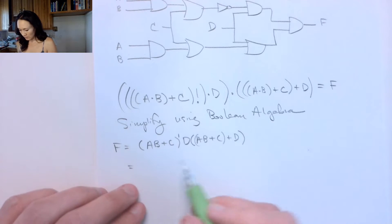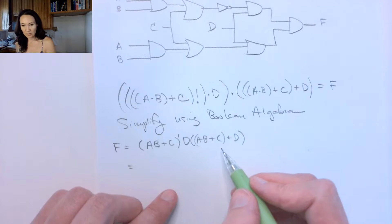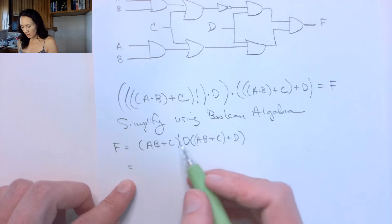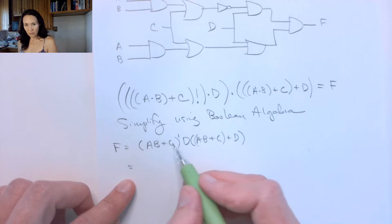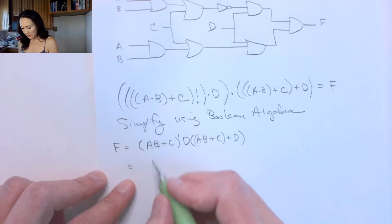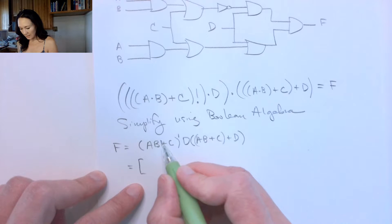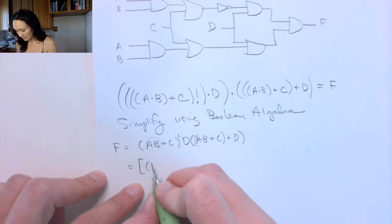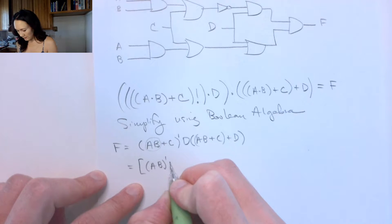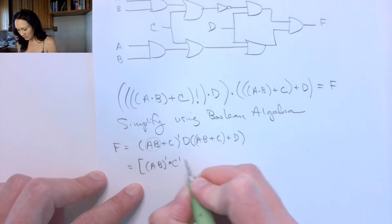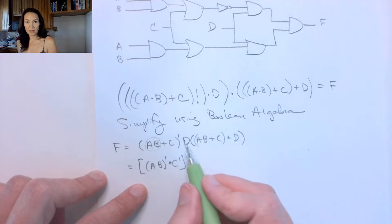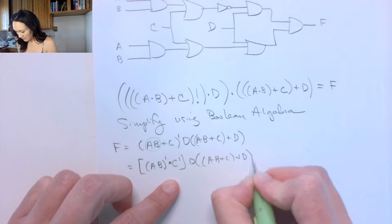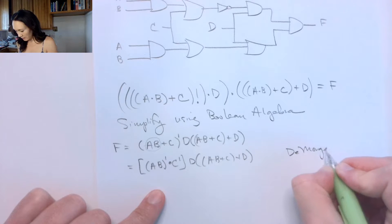What I'm going to do is apply DeMorgan's to this term right here. Everything inside, I'm going to distribute this negative to all the terms and change this OR to an AND. Be careful: when I distribute this negative, it distributes to the entire multiplicative term AB, not to A and B individually — we'd have to apply DeMorgan's again for that. So AB gets its own NOT, we change the OR to an AND, and C gets its own NOT. This is the result of applying DeMorgan's theorem.